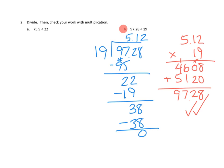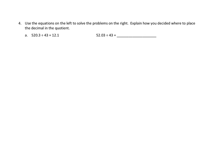Let's take a look at one more problem from tonight's homework. Problem number four. It's a little less of a calculation problem and more of a thinking problem. Let's take a look at the directions. Use the equations on the left to solve the problems on the right. Explain how you decided where to place the decimal in the quotient. So they give us in 4a, they kind of give us a completed math sentence. They say that 520 and 3 tenths divided by 43 equals 12 and 1 tenth. So they give us that as a given here. We don't have to do any calculations. And then they ask us this question. What about 52 and 3 hundredths divided by 43?